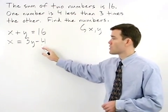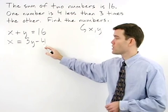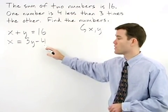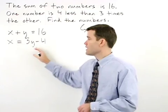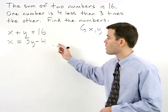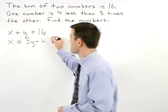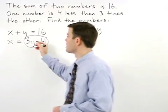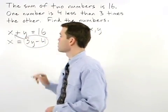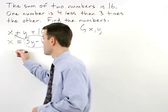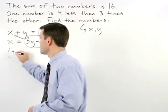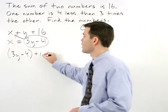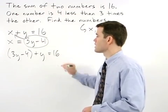So to solve this system of equations, let's use substitution. Since x equals 3y minus 4, we can substitute 3y minus 4 in for the x in the first equation to get (3y minus 4) plus y equals 16.